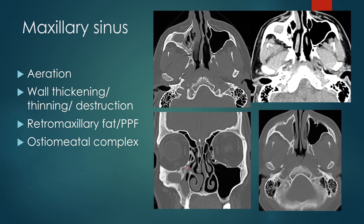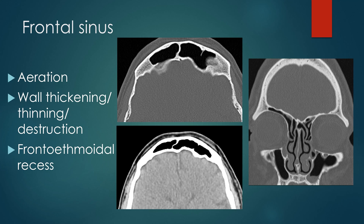In the frontal sinus, you also discuss how aerated it is — this is a well aerated frontal sinus. You look for areas of bony wall thickening, thinning, or destruction, as we discussed in the maxillary sinus. The drainage of the frontal sinus is through the frontoethmoidal recesses — a tract from the frontal sinus to the anterior ethmoid air cells — and you'd like to see a patent frontoethmoidal recess on both sides.